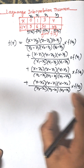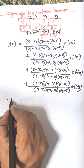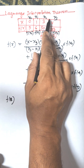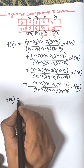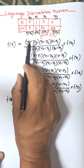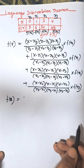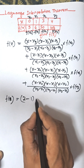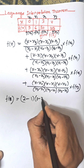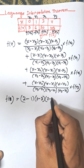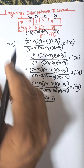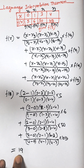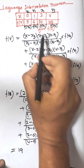Now we need to find f(2). Here x is 2. Putting all the values into the equation: x is 2, x1 is 1, x2 is 3, x3 is 4, and the denominator terms like 0 minus 1, 0 minus 3. Calculating these values, we get 19, which is in between 60 and 50.